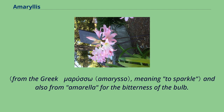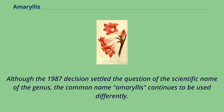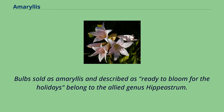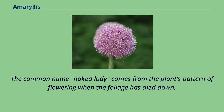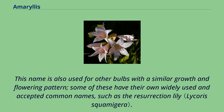Although the 1987 decision settled the question of the scientific name of the genus, the common name Amaryllis continues to be used differently. Bulbs sold as Amaryllis and described as ready to bloom for the holidays belong to the allied genus Hippiastrum. The common name Naked Lady comes from the plant's pattern of flowering when the foliage has died down, and this name is also used for other bulbs with a similar growth and flowering pattern, such as the Resurrection Lily.